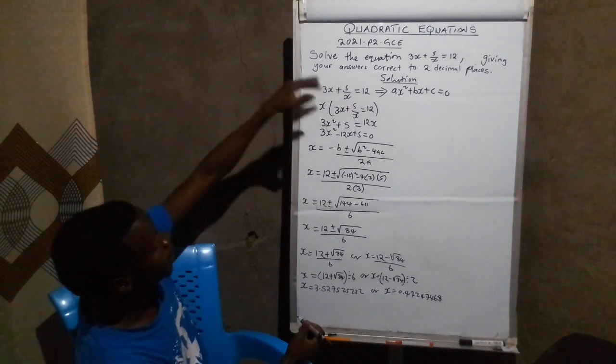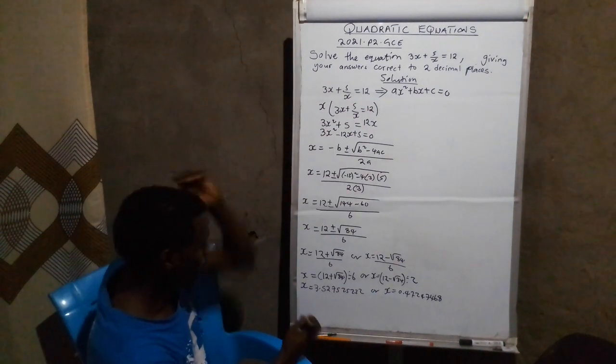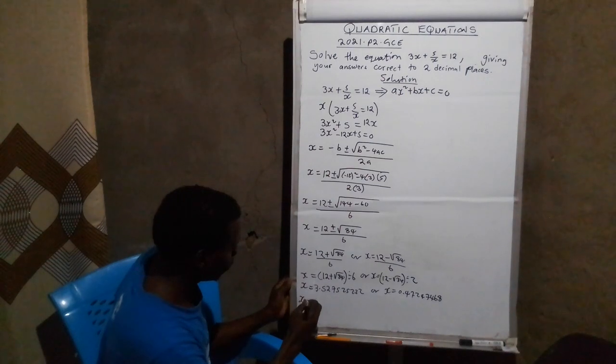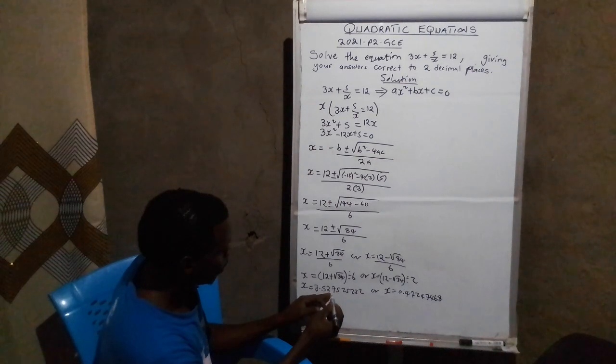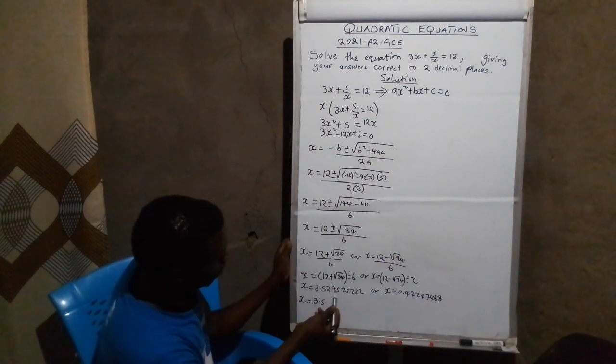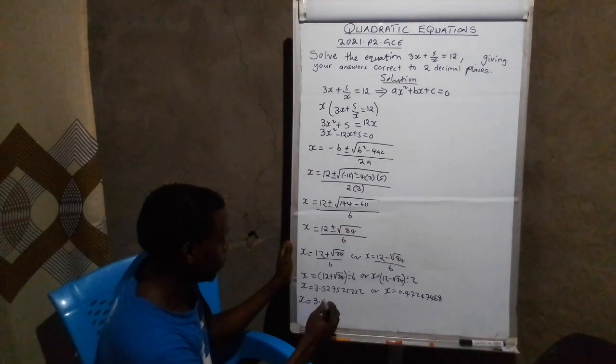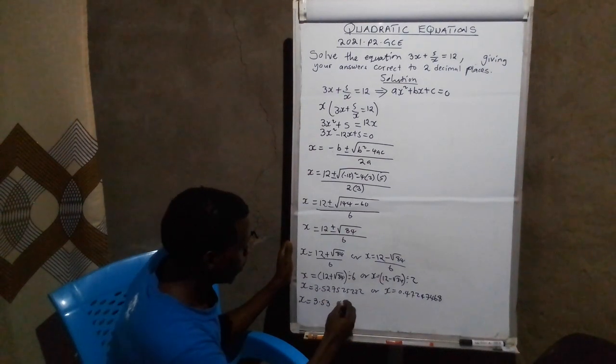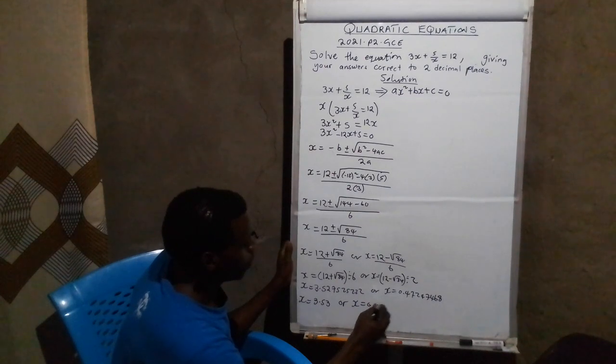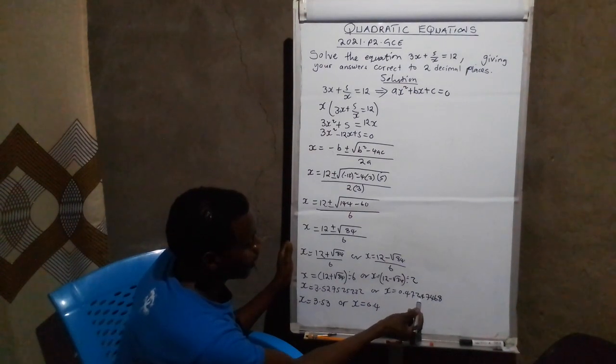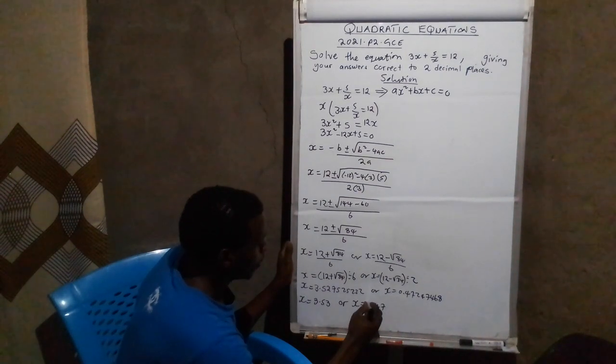Remember, the question says you have to leave our answers correct to two decimal places. This side, x will be equal to, in the rounding of this one, it will be 3.53. The rounding figure is 2. The number next to 2 is less than 5... greater than 5. Borrow 1, we add 2, it will be 3. Then on this side, x will be equal to 0.47. The rounding figure is 7. The next number is less than 5, so we just write 0.47.